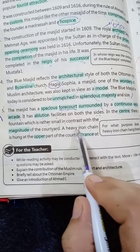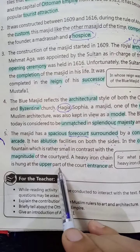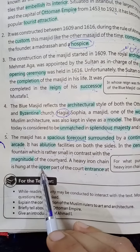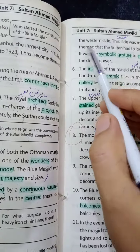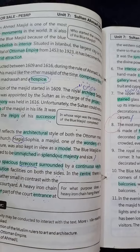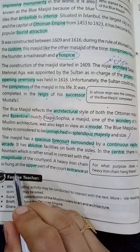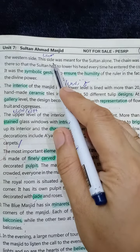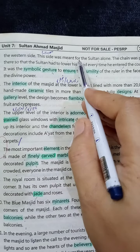A heavy iron chain — ایک بھاری لوہے کی زنجیر — is hung — لٹکائی گئی ہے — at the upper part of the court's entrance — سہن کے داخلی دروازے کے اوپری حصے میں۔ At the western side — مغربی طرف — مغرب کی طرف سہن کے داخلی دروازے کے اوپری حصے پر ایک بھاری لوہے کی زنجیر لٹکائی گئی ہے۔ This side — یہ سمت — was meant for the sultan alone — صرف سلطان کے لئے مخصوص ہے۔